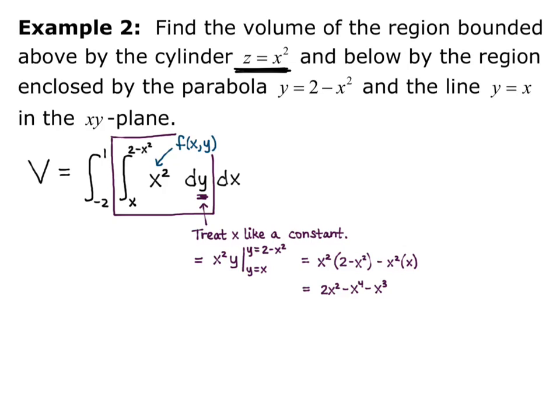So that's my inner integral evaluated at the bounds. Now what I want to do is take that result and plug it into the outer integral which we have not yet evaluated. So I'm going to have the volume equals the integral from negative 2 to 1 of the expression that we just found, 2x squared minus x to the fourth minus x cubed. And now we're integrating with respect to x, so we'll have dx.